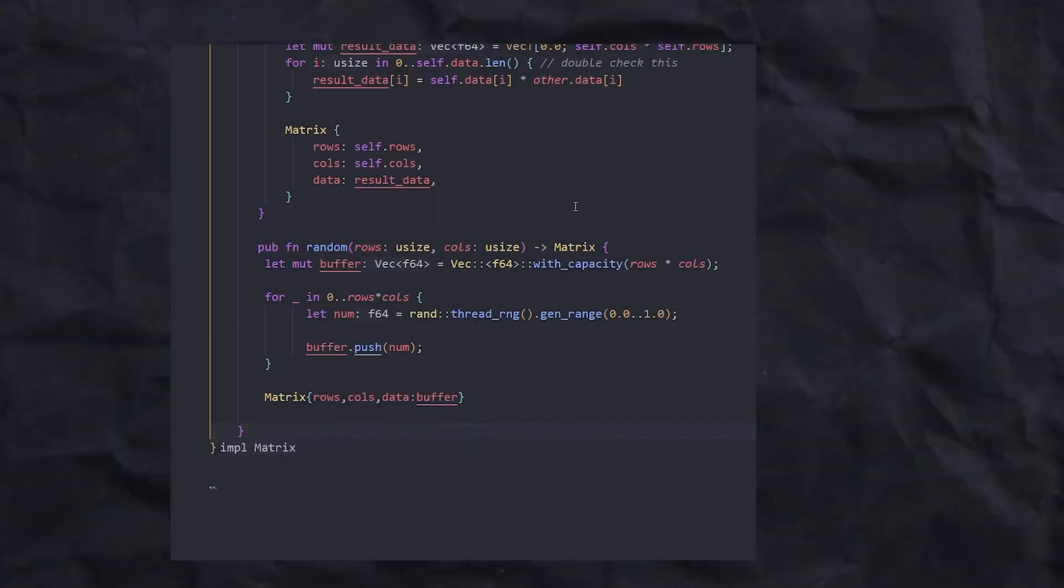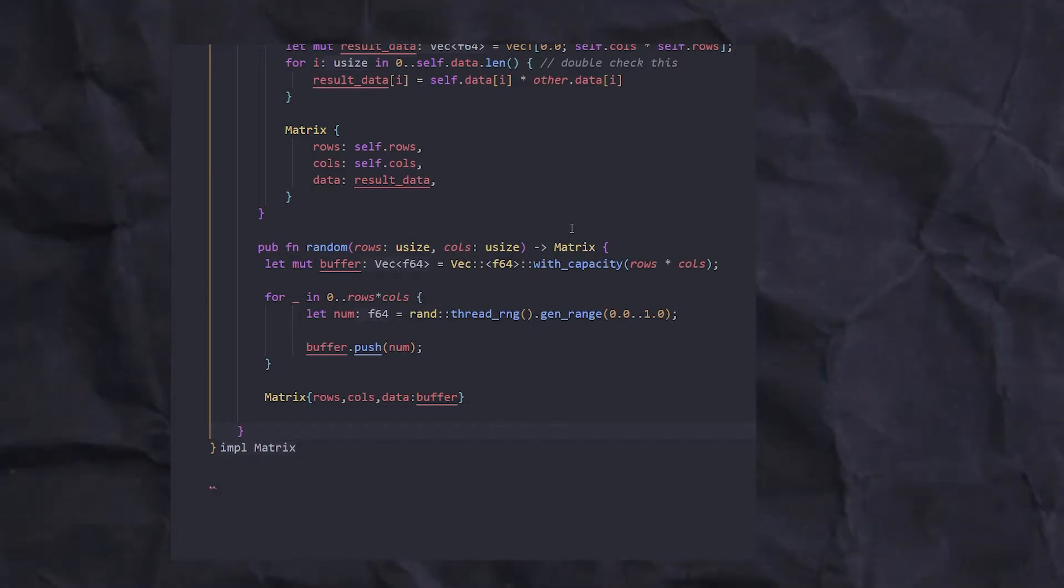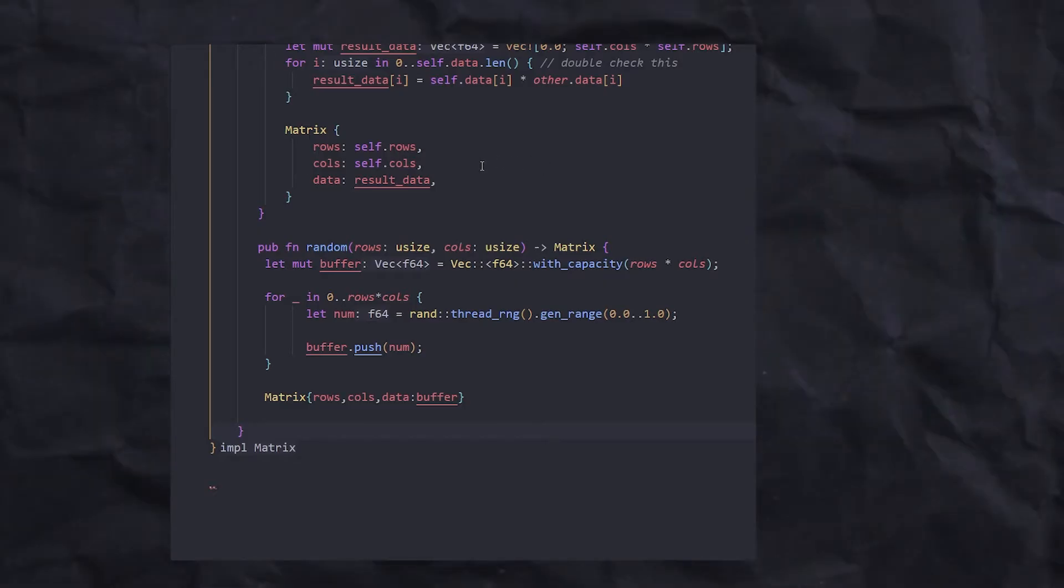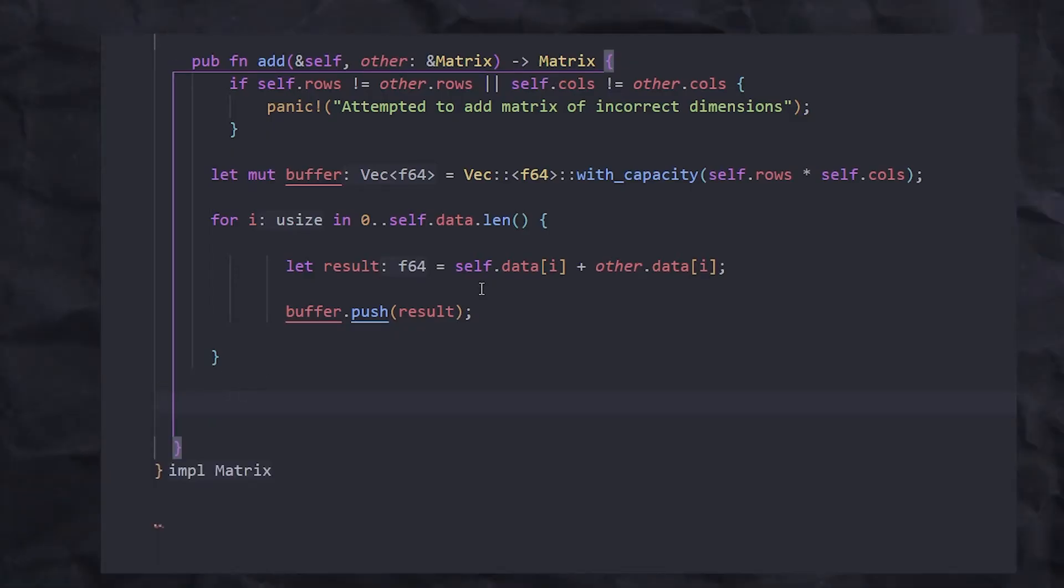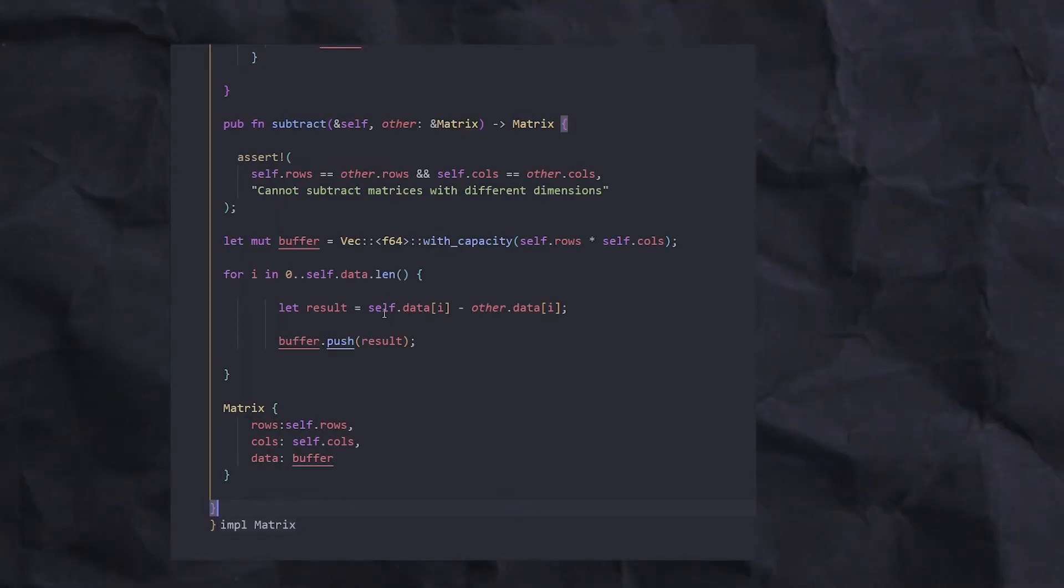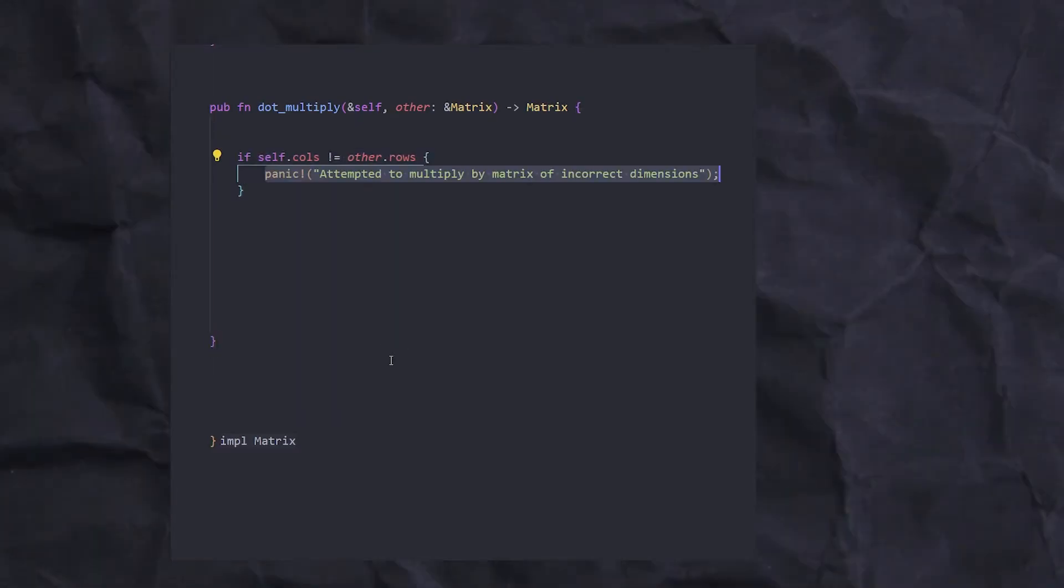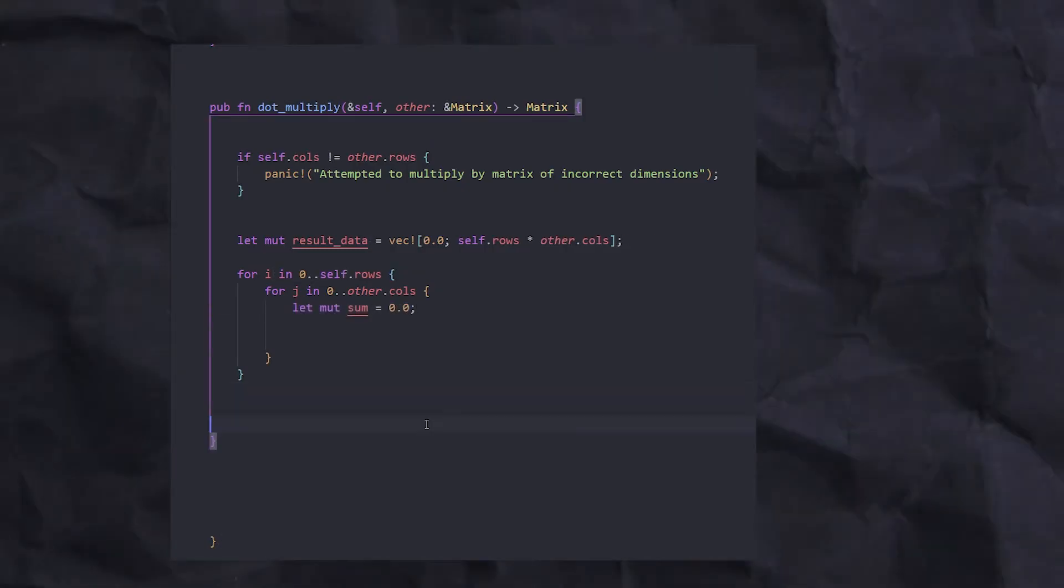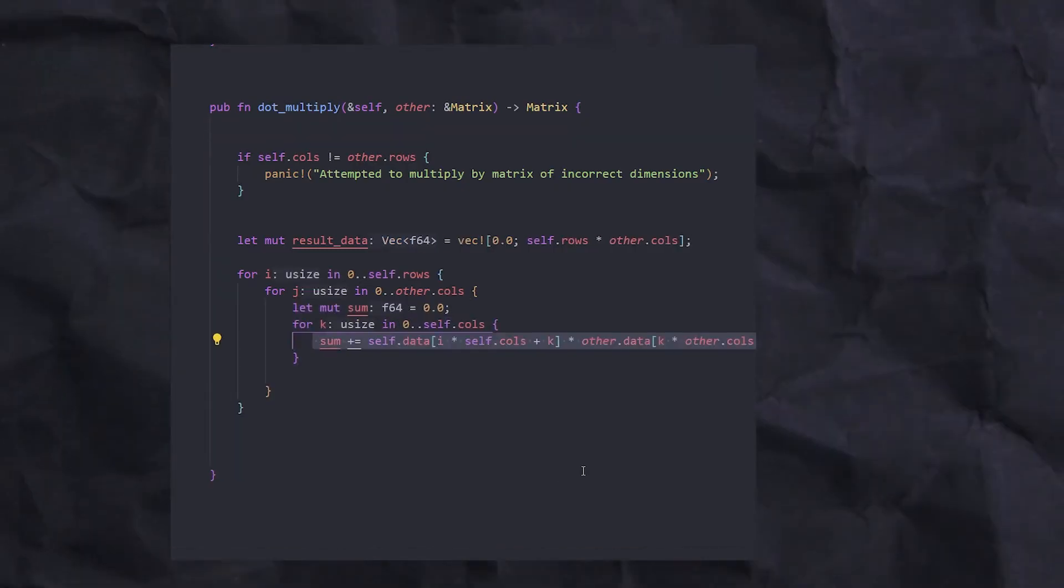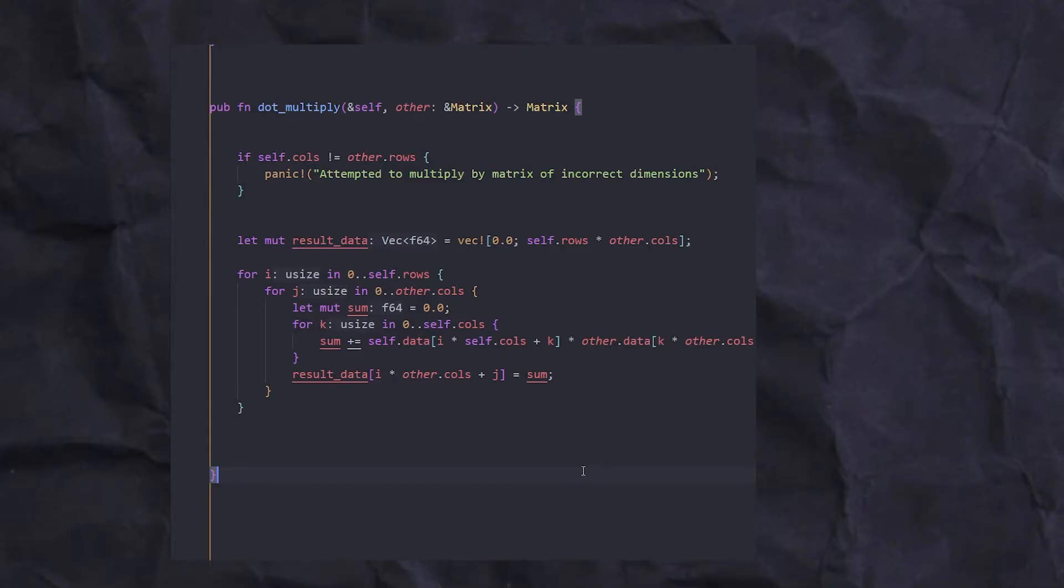This is a function to generate random matrices. We use it to create matrices in the beginning that we can then use to fine-tune our neural network. This is our addition function, which we're going to use to add two different matrices. And next we've got our subtract. Well, you know what that one does. And finally, we've got our dot product. It's used to multiply each input by its corresponding weight. Here we take the corresponding element from each matrix, add them together, and then place them into a result matrix.